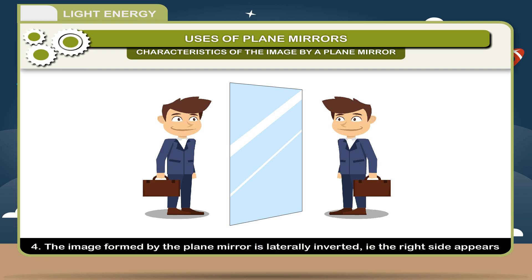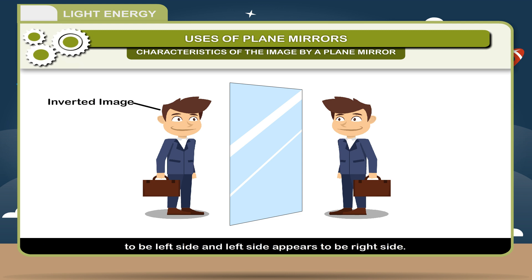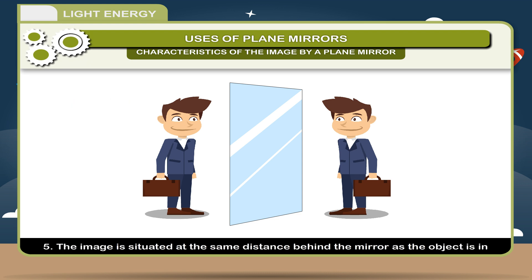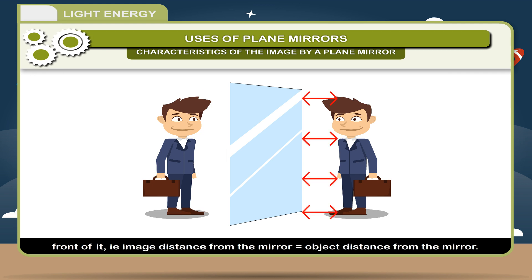The image formed by a plane mirror is laterally inverted, i.e., the right side appears to be the left side and the left side appears to be the right side. The image is situated at the same distance behind the mirror as the object is in front of it, and is equal to the object distance from the mirror.